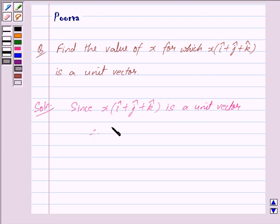Therefore, we have |x(î + ĵ + k̂)| = 1. This implies...